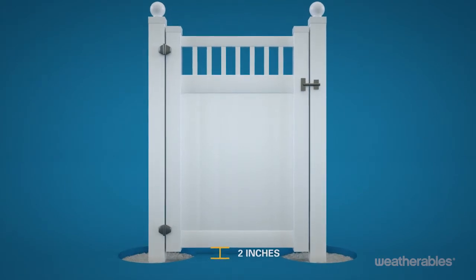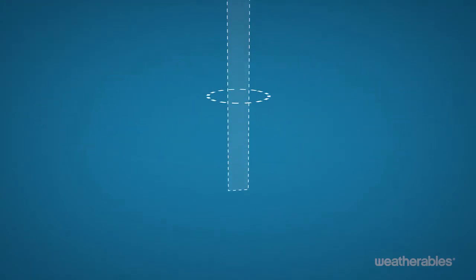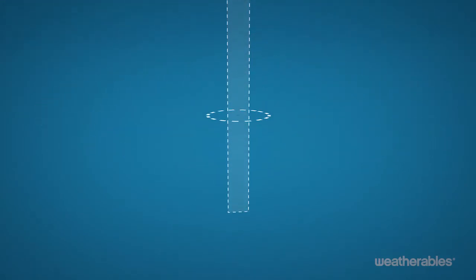This is a critical step since the gate will set the height for the rest of the fence. After marking the locations of your fence posts, begin digging the post holes for the panels.